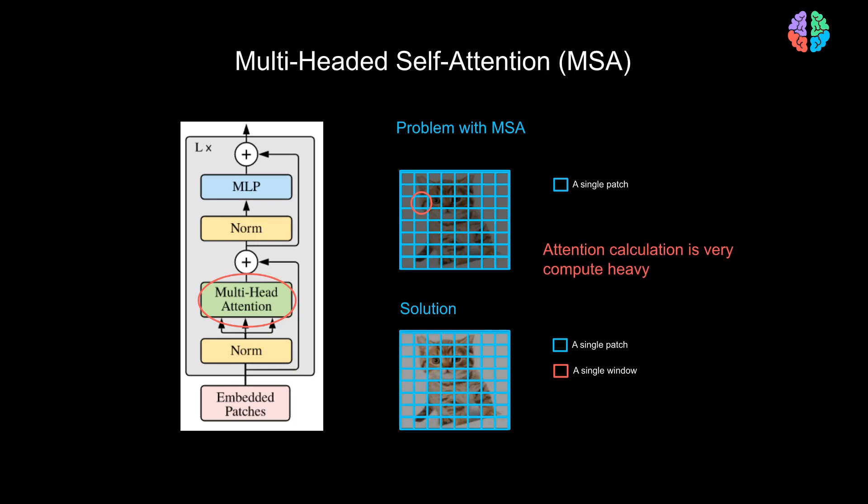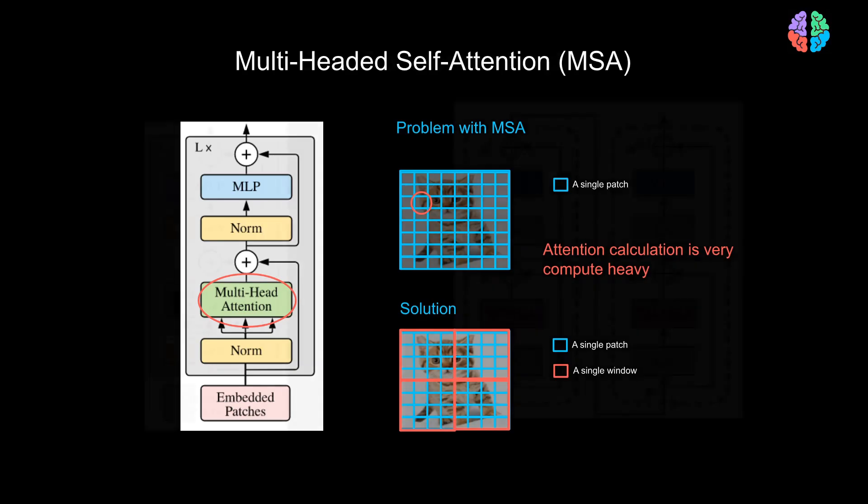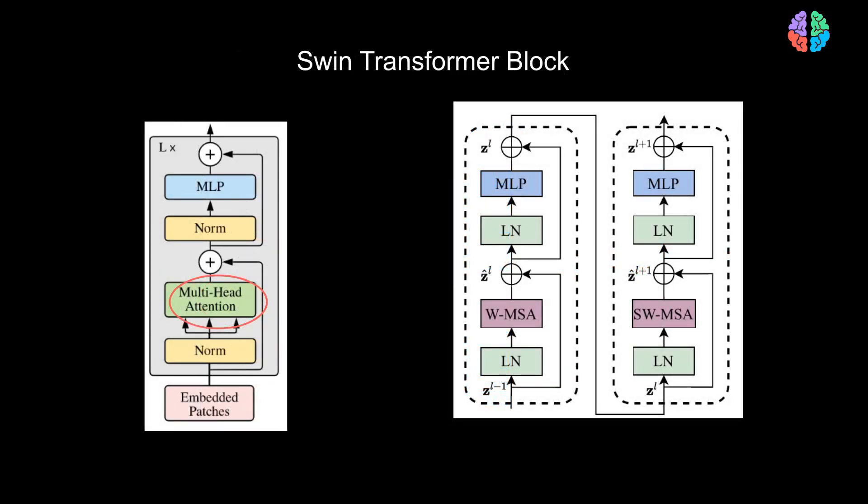To overcome this, what Swin Transformer introduces is called the windows. A window divides the input image into several parts. What we see here is the input image divided into 4 windows. After dividing into such windows, whenever we compute self-attention between patches within that window, and we ignore the rest of the patches.